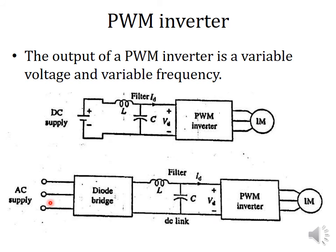Similarly, if we have an AC supply, in order to give a DC supply to the PWM inverter, we only need to use a diode bridge rectifier. We do not need a controlled rectifier because the PWM inverter is capable of controlling the voltage level itself. So only a fixed DC input is needed, and a simple diode bridge rectifier is sufficient.